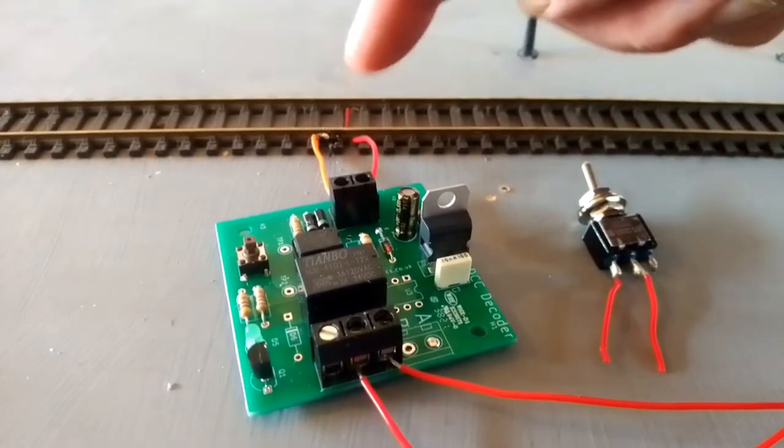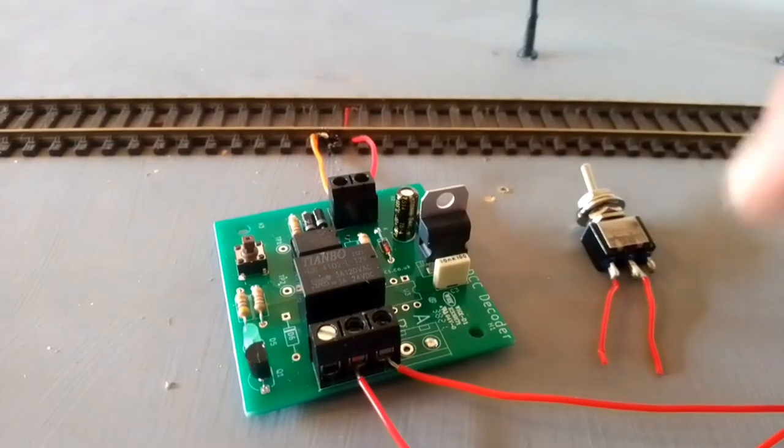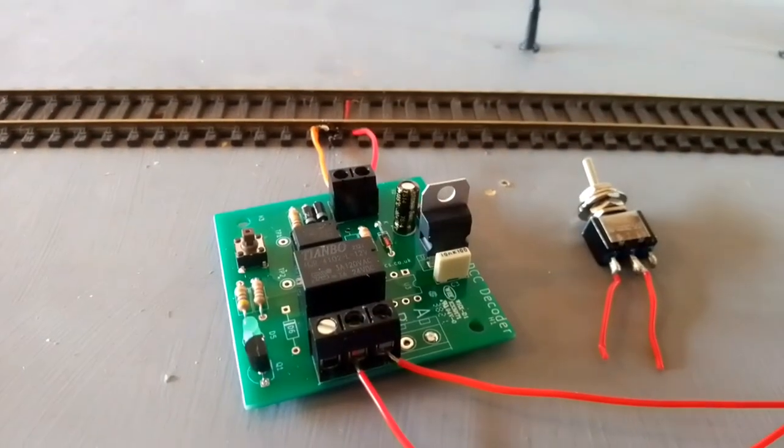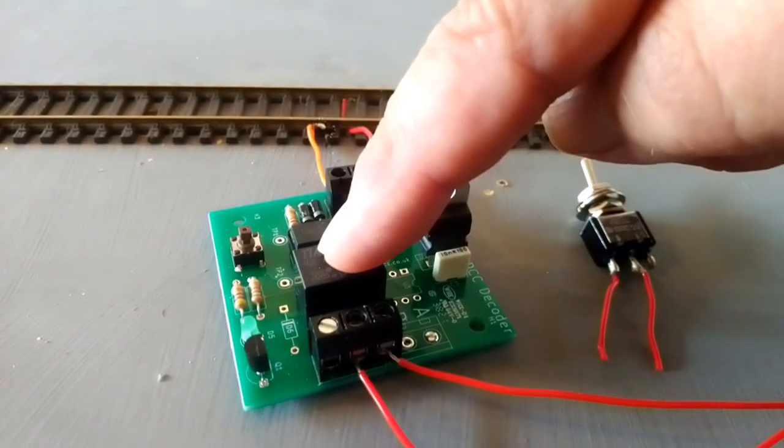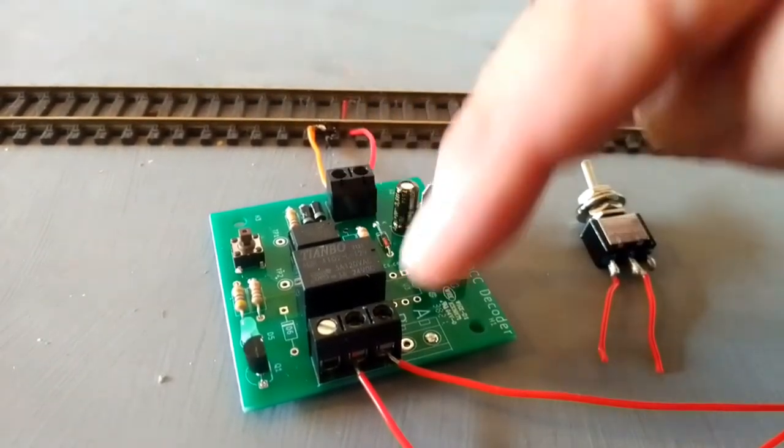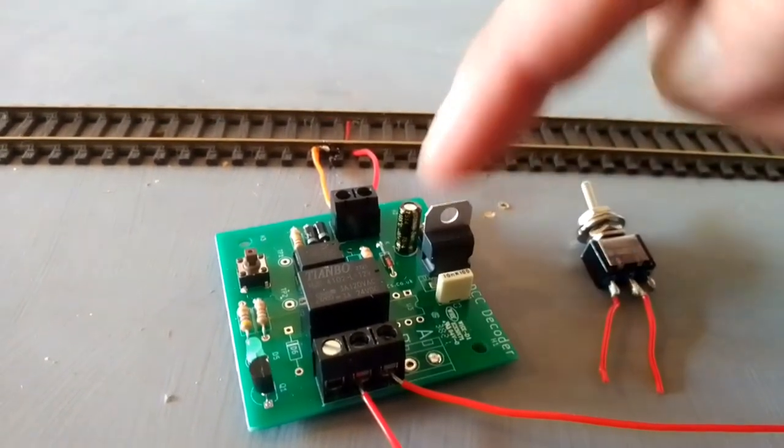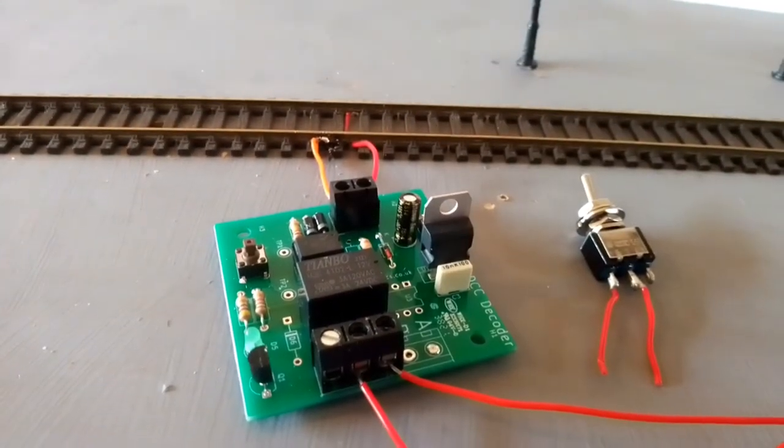The accessory decoder board is connected to the track, and the two wires from the switch have been cut off and put into the accessory decoder board. This component on the board is a relay, and that means there's complete electrical isolation between the power supply for the track and the power supply for the lights.